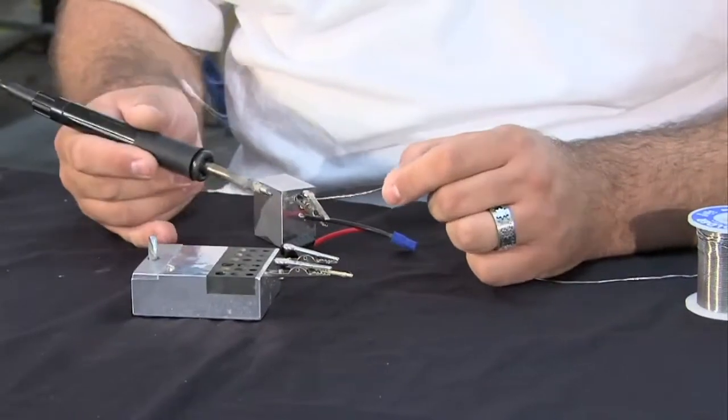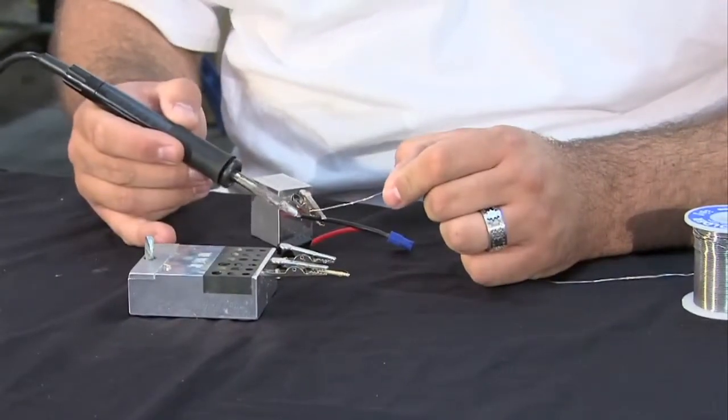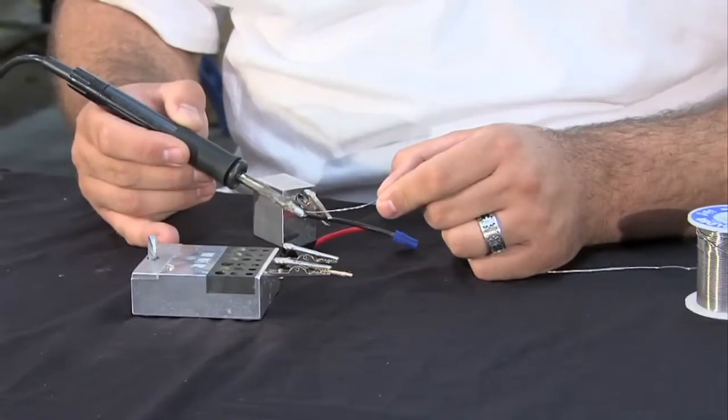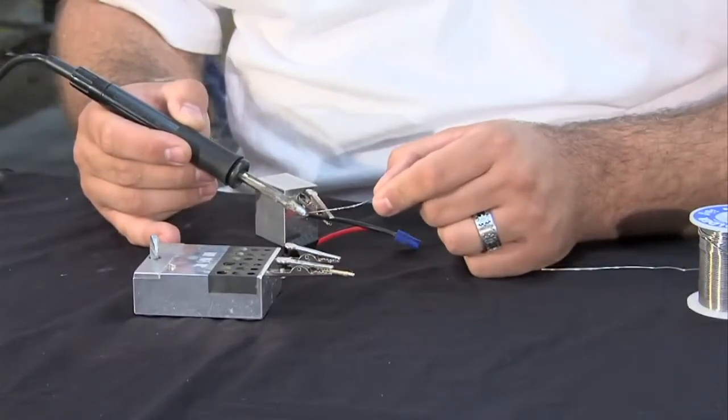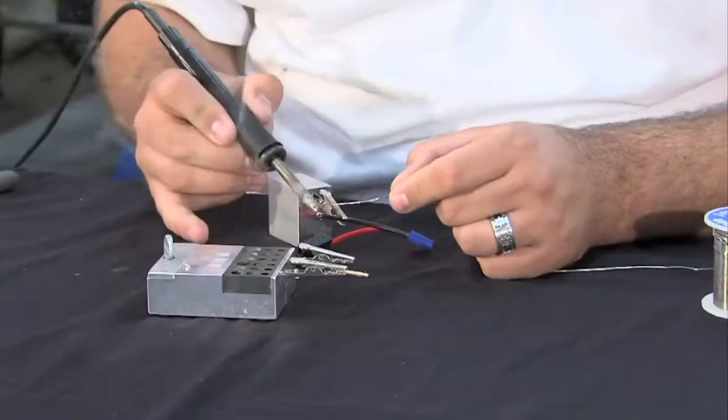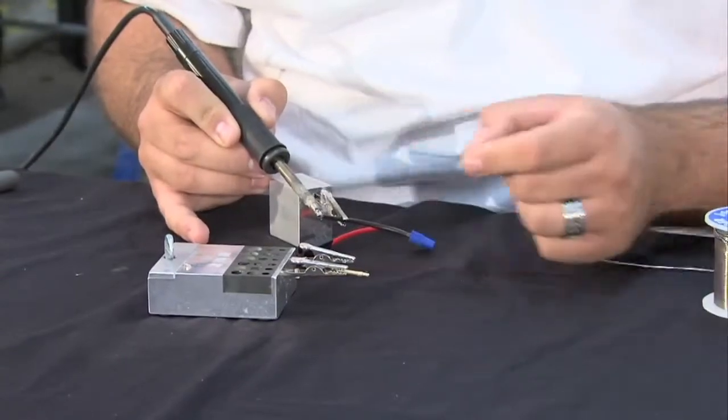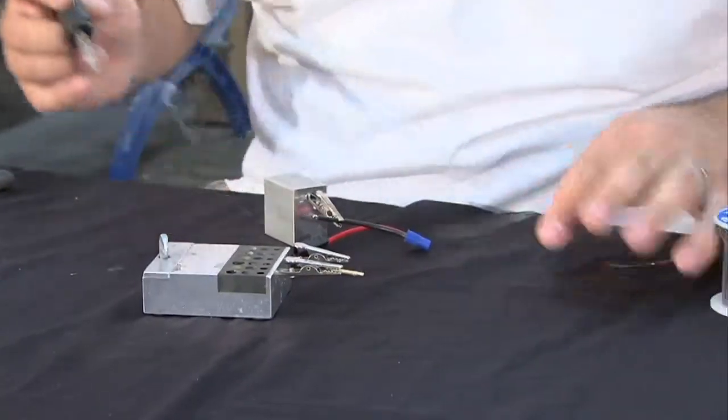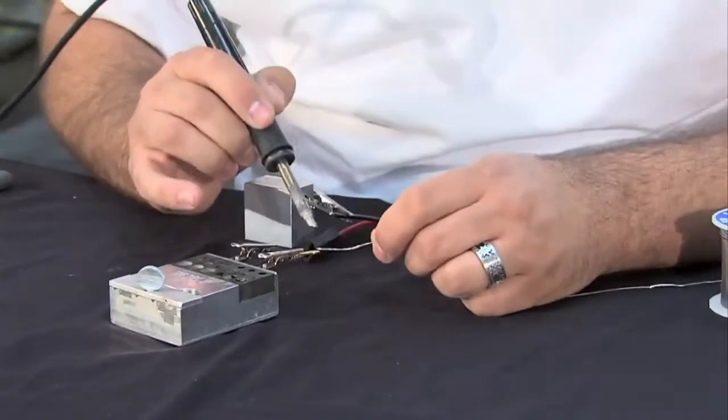Again, adding a little solder to your soldering iron, touch the connection and add your solder. It will flow evenly onto the wire like such. Once you have that done, you're going to pre-tint the probe.